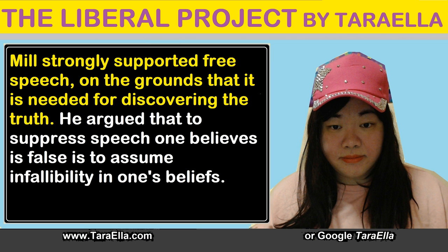Mill strongly supported free speech on the grounds that it is needed for discovering the truth. He argued that to suppress speech one believes is false is to assume infallibility in one's beliefs. This is an error, because humans are not capable of infallibility in knowledge. Notice that this is quite similar to the core moral libertarian argument for equal moral agency for every individual, except that in moral libertarianism it extends to moral actions as well as speech. Mill further argued that there is value in even the assertion of false beliefs, because they may still lead to a better understanding and defence of the truth.